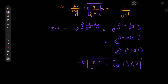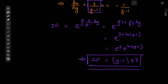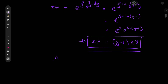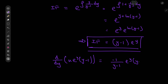We multiply our differential equation by the integrating factor to get on the left-hand side the derivative with respect to y of u times e to the y times y minus 1. On the right we have negative 1 by y minus 1 times e to the y times y minus 1. After some nice cancellation, we integrate with respect to y.